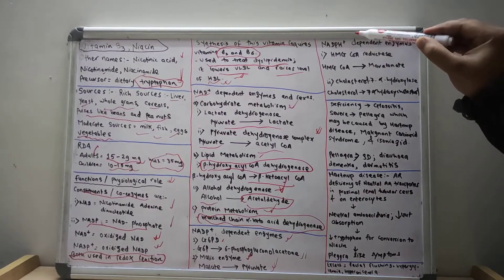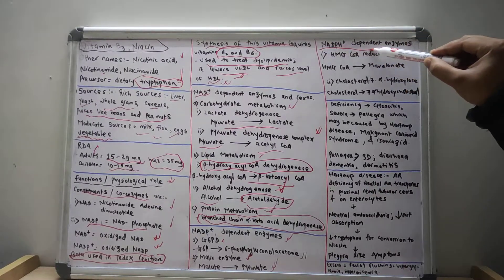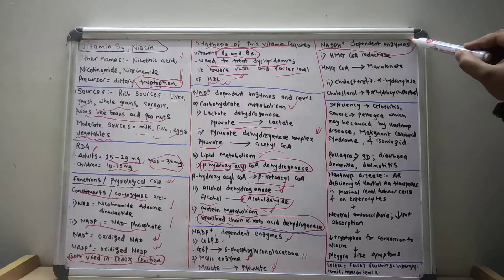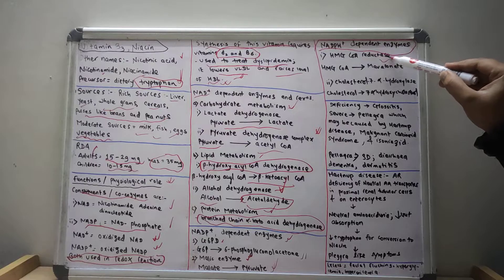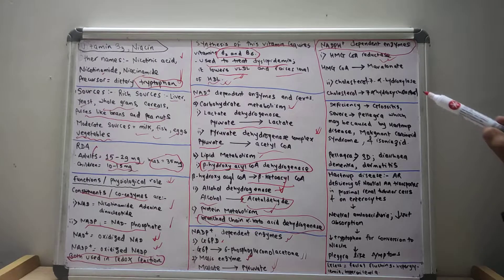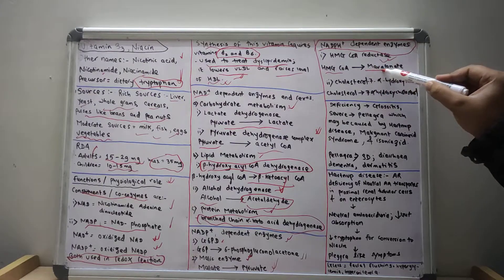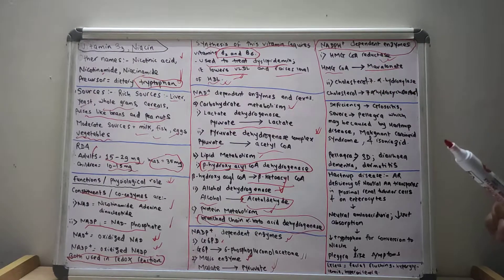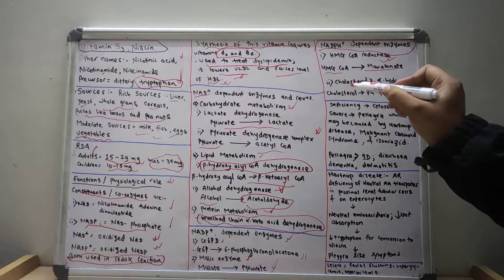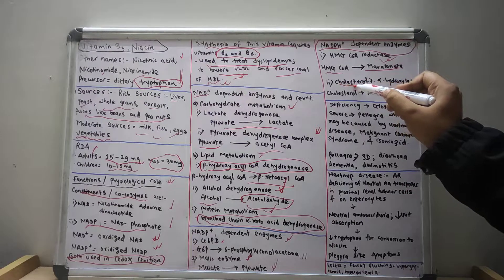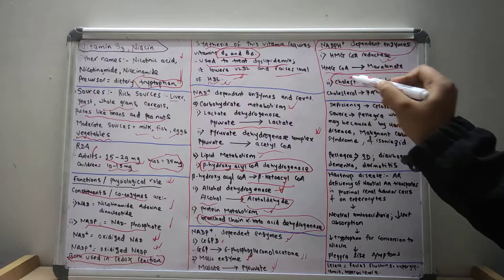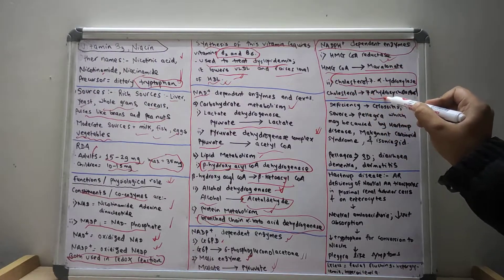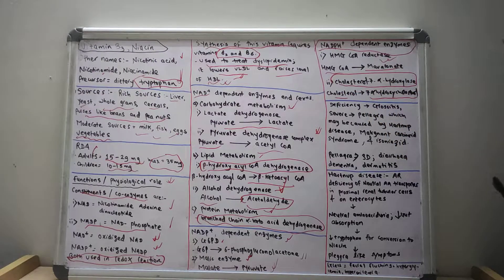The NADP plus dependent enzymes include HMG-CoA reductase, which changes HMG-CoA to mevalonate, and cholesterol 7-alpha hydroxylase, which changes cholesterol into 7-alpha hydroxycholesterol.